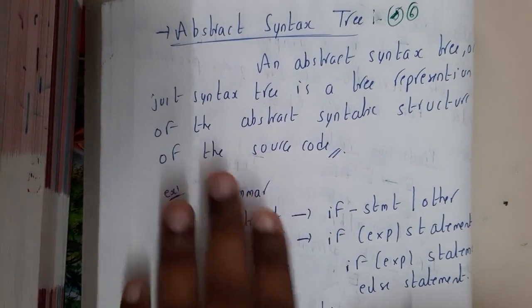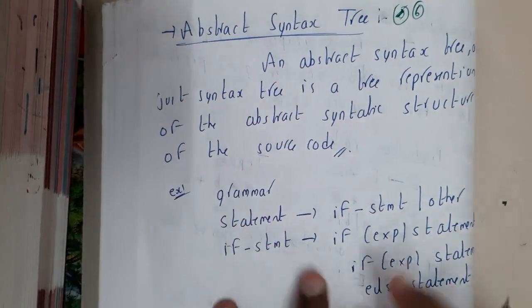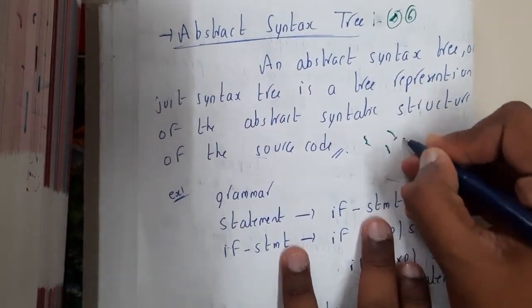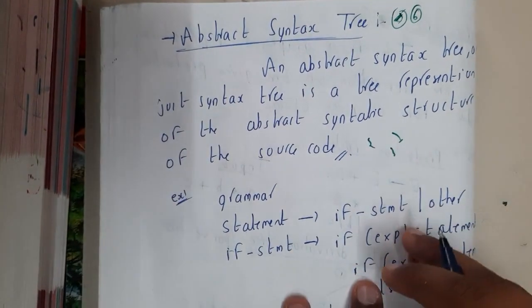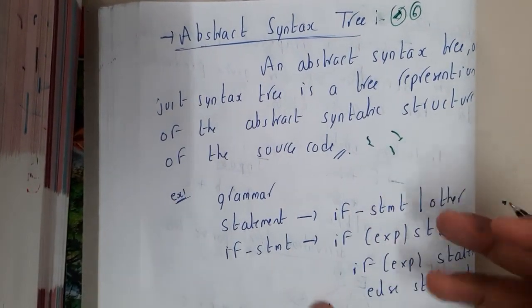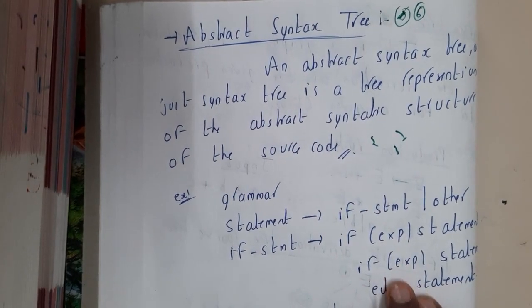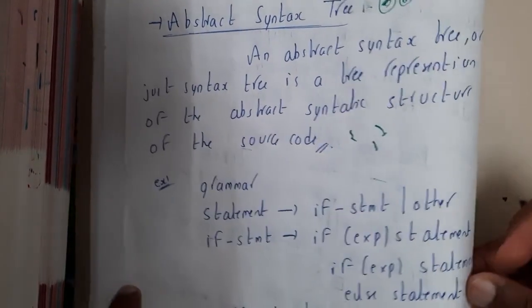Basically, it is trying to say that code can be represented in a graphical structure or in a tree structure. That is nothing but an abstract syntax tree. For this, if you take a small example, the grammar will be in this way.